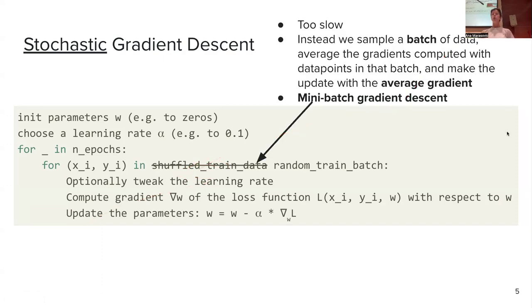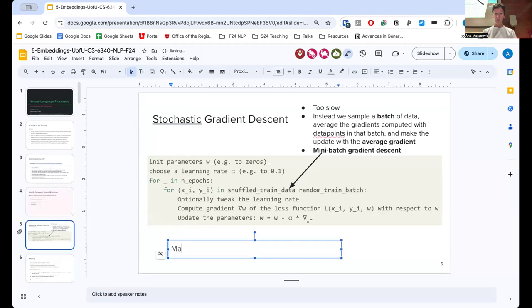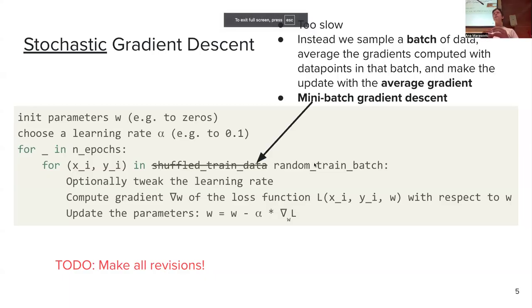The issue with full gradient descent is that it's too slow. In practice, we never actually iterate over the entire data — though you will still do it for your first assignment. In practice, when we train neural networks, we are going to sample a small batch of data, and then we are going to average the gradients computed for the data points in that batch and make the update with the average gradient.